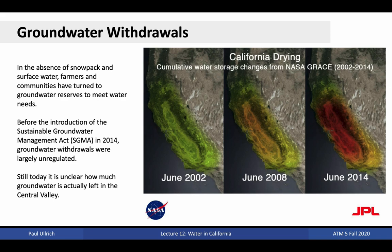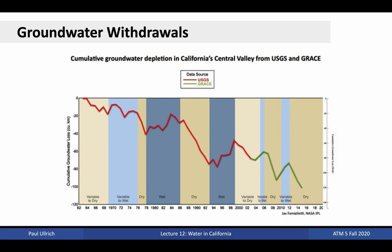These withdrawals have become even more severe over the recent 2012–2016 California drought. NASA's GRACE satellite was recently launched to estimate changes in groundwater content worldwide by measuring its gravitational pull. Over the past 20 years, it has picked up on a substantial decline in California Central Valley groundwater. This is perhaps no surprise, as in the absence of snowpack and surface water, farmers have turned to groundwater reserves to meet their needs. Before the introduction of the Sustainable Groundwater Management Act, or SGMA, in California in 2014, these groundwater withdrawals were largely unregulated and unsustainable. However, SGMA intends to ensure our groundwater withdrawals are sustainable into the future — that is, our withdrawals do not exceed our deposits. As can be seen on a 60-year record of groundwater loss, the added groundwater during wet periods has not been enough to compensate for withdrawals during dry periods.